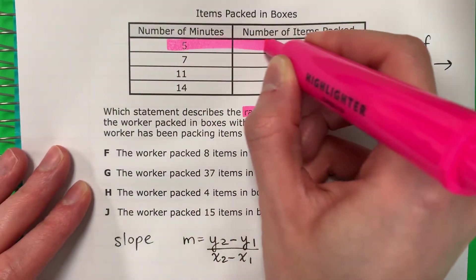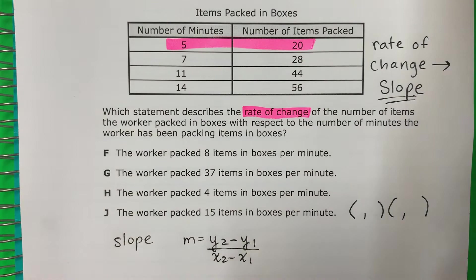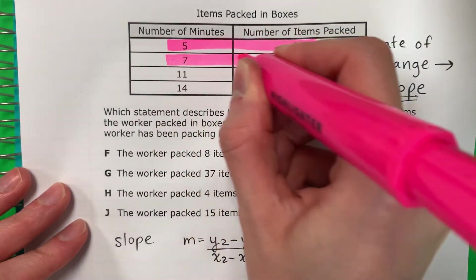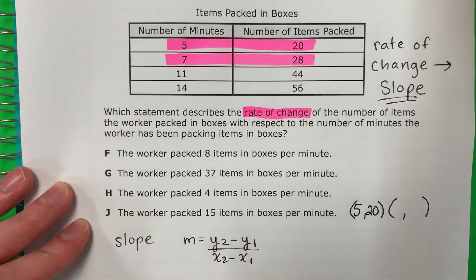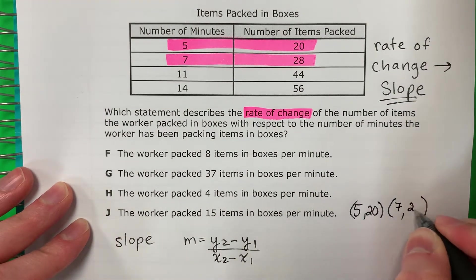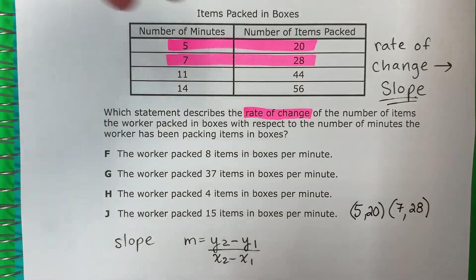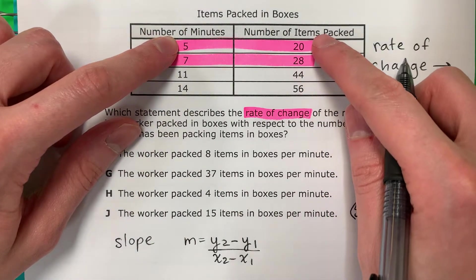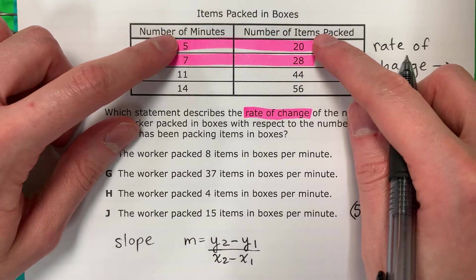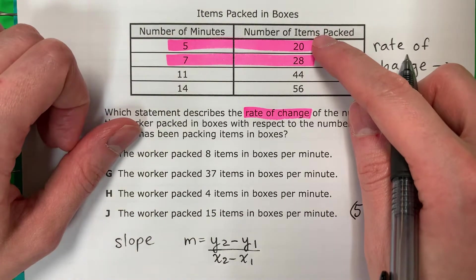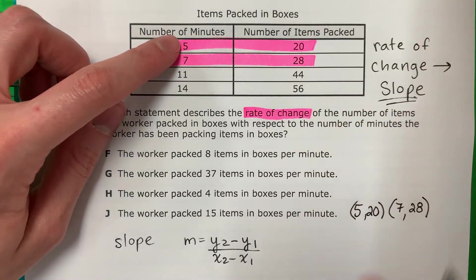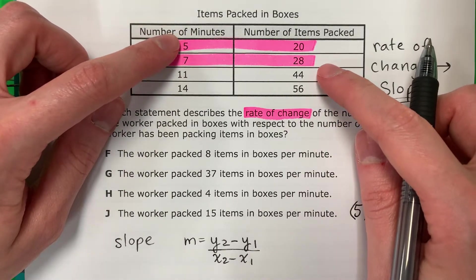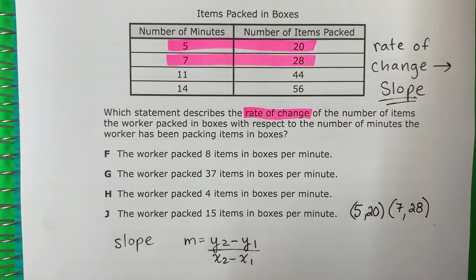So I will use 5 and 20, and 7 and 28. So remember, these are a pair. Recuerda que estos son un par. If you pick 5, you have to use 20. Si quieres usar las 5, debes usar la 20. You cannot do 5 and 44, for example. Por ejemplo, no puedo usar 5 con 44. It has to be a pair, un par.